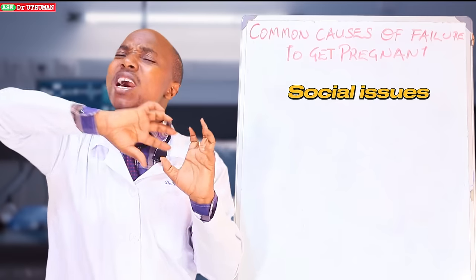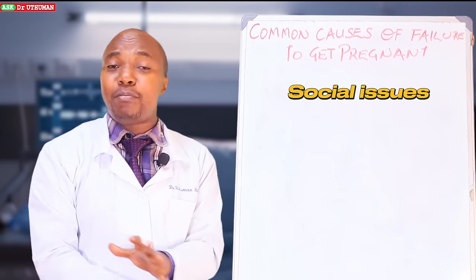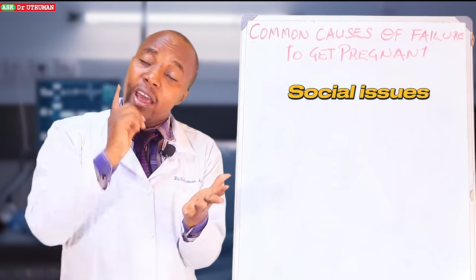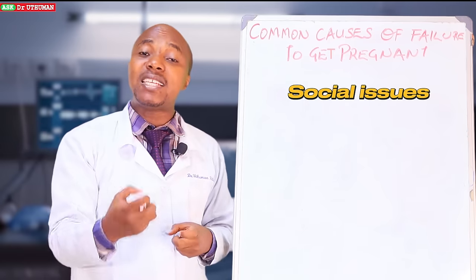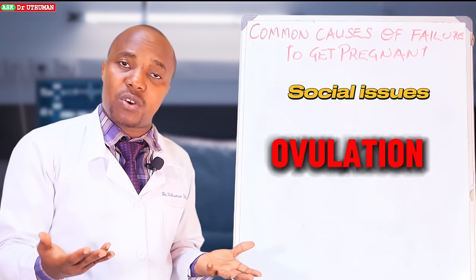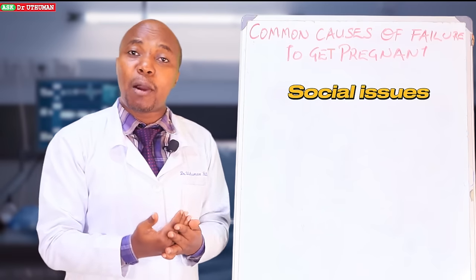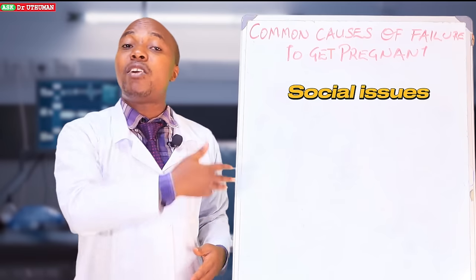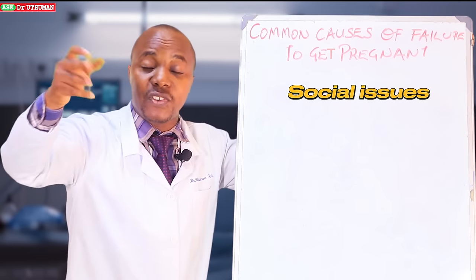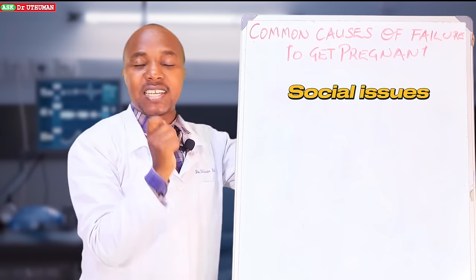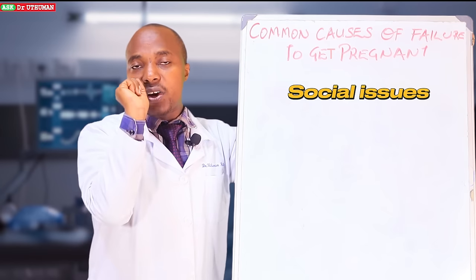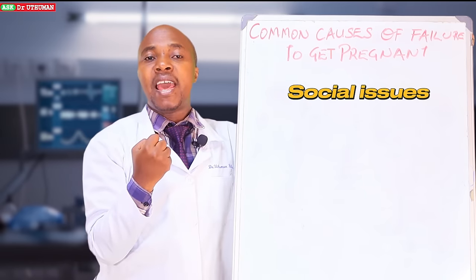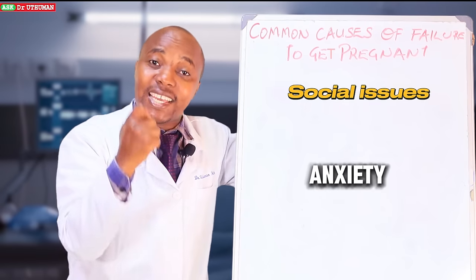Because I don't want us to run to very big things — maybe I'm sick, maybe I was bewitched — first look at that: long-distance relationship. Number two, as far as social issues are concerned, is failure to time your ovulation. There are some couples that do have sex, but forget to have sex on their ovulation day, and therefore they will spend like two years without conceiving. That also results from those couples in a long-distance relationship.